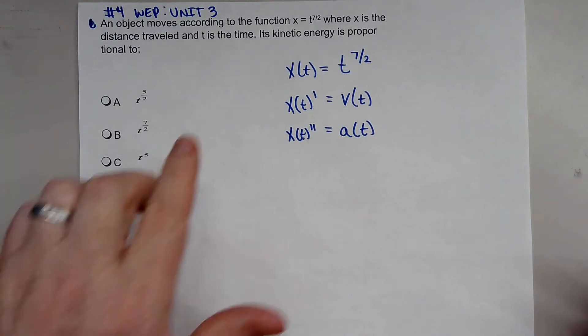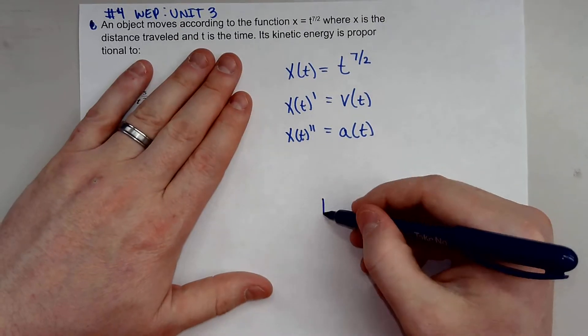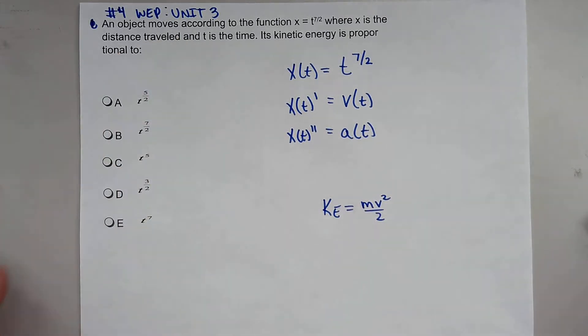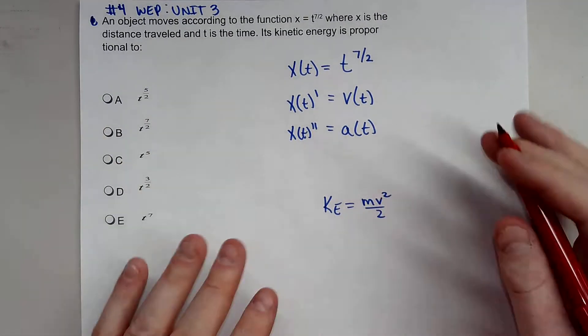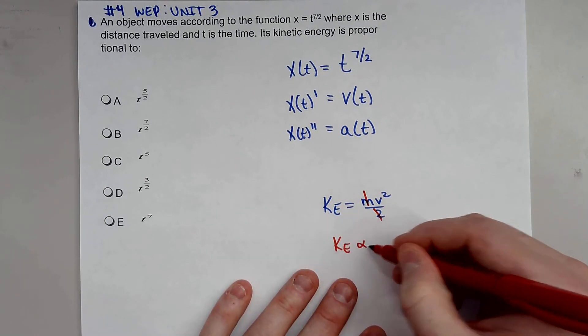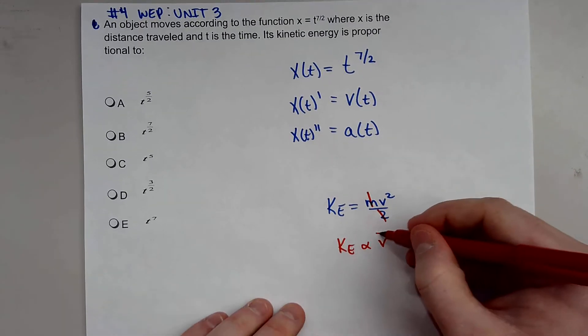So it's asking the kinetic energy is proportional to what? Kinetic energy is equal to (1/2)mv^2. So what we're looking at here is kinetic energy, if mass is constant, we know kinetic energy is proportional to v^2, to the velocity squared.